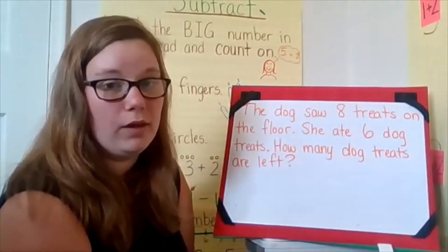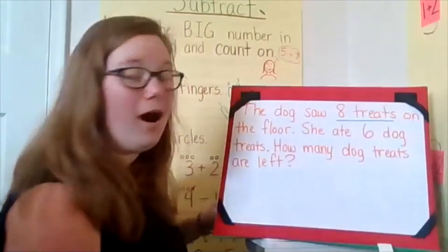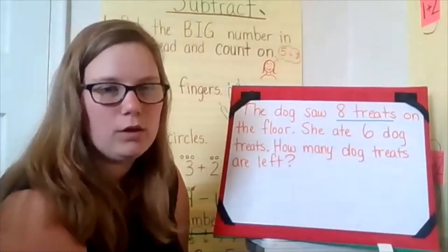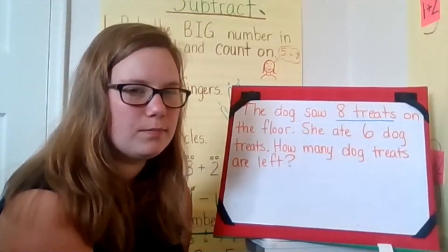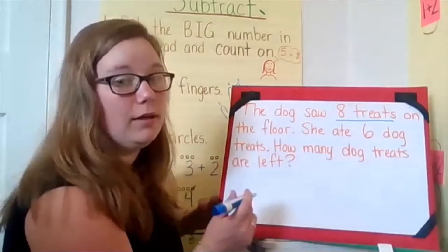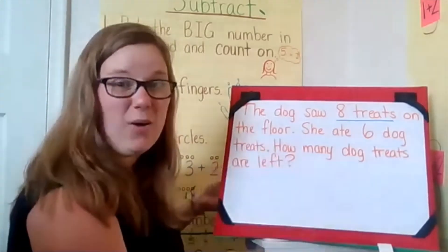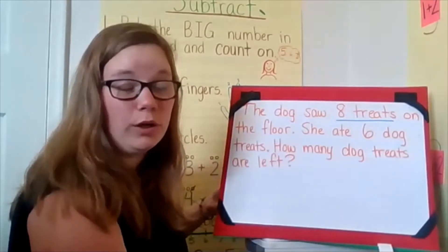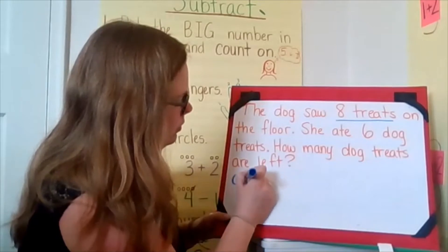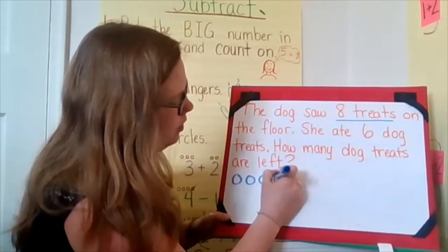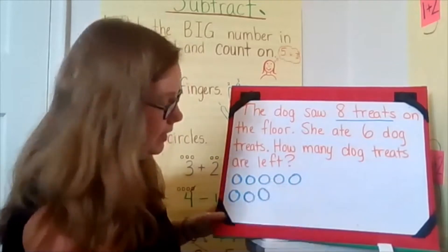Let's use our drawing circle strategy to see if your answer is correct. We know that there were eight dog treats on the floor. So how many circles do I need to draw first? Eight, because the dog saw eight treats on the floor. And that's how many dog treats there were first. So we're going to draw eight circles. Ready? One, two, three, four, five, six, seven, eight.